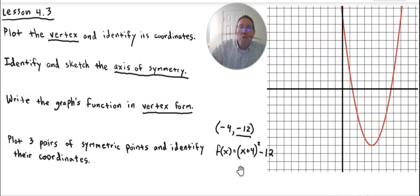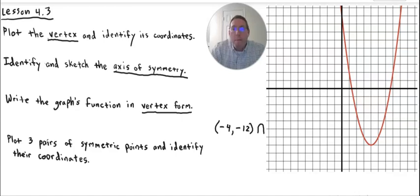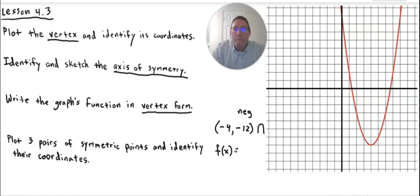This is assuming it's an upward parabola. What if it was a downward parabola? Downward means it's negative. It's going to be the exact same thing, but we're going to put a negative in front. So it becomes f(x) = −(x + 4)² − 12. We put a negative in front because it's a negative parabola. It really is that simple.